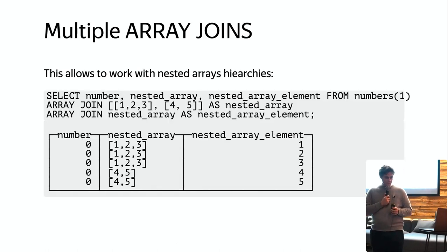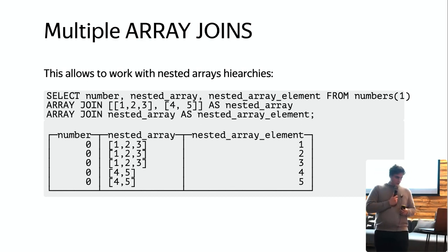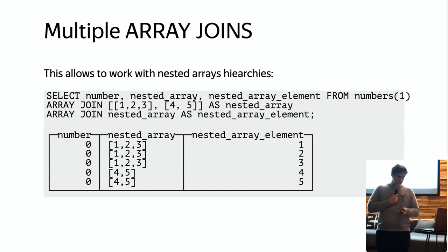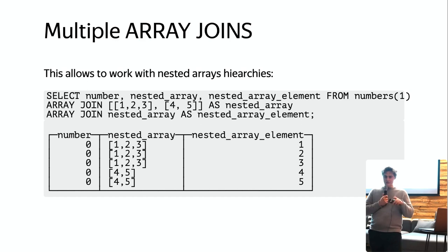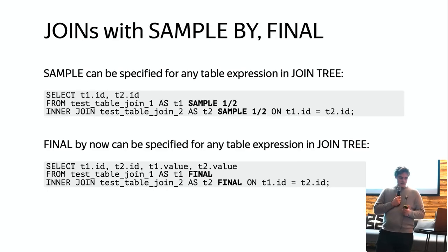Multiple ARRAY JOINs allow you to work with nested array hierarchies. For example, you have a nested array — an array of arrays where the first inner array is [1,2,3] and the second is [4,5]. You make an ARRAY JOIN of index zero with the nested array, then another ARRAY JOIN with the inner elements, and you can see everything works as expected. You can now easily deal with such hierarchies.